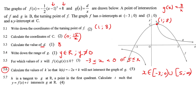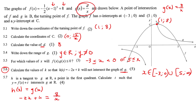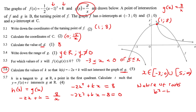Calculate the value of k so that h(x) will not intersect the graph of g. We set h(x) equal to g(x): −2x + k = 8/x. Multiplying through by x gives −2x² + kx = 8. Rearranging into a quadratic: −2x² + kx − 8 = 0. We can't solve this because it has both x and k, but we can use the nature of roots.